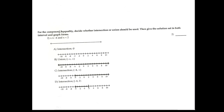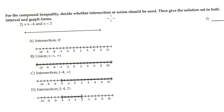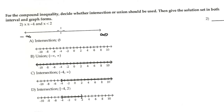The second question is about a compound inequality — intersection or union. In this case it's intersection. On the number line: positive infinity on the right, negative infinity on the left, zero in the middle. Positive two is here, and negative four is here.